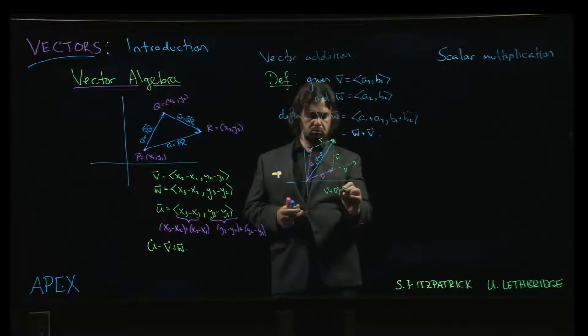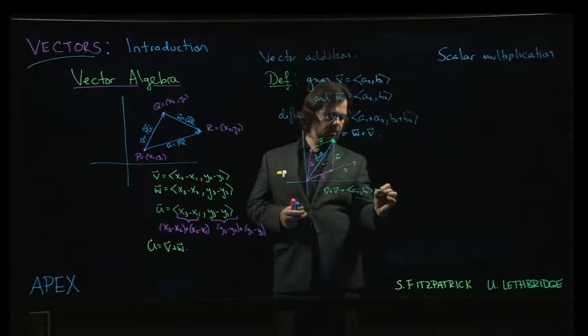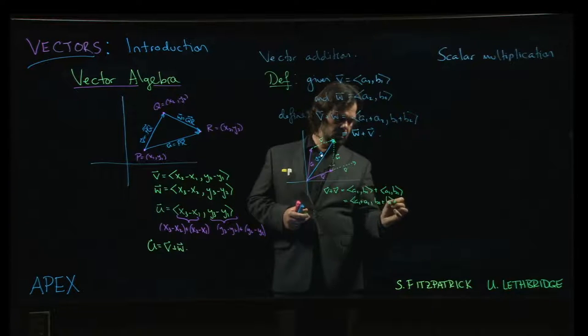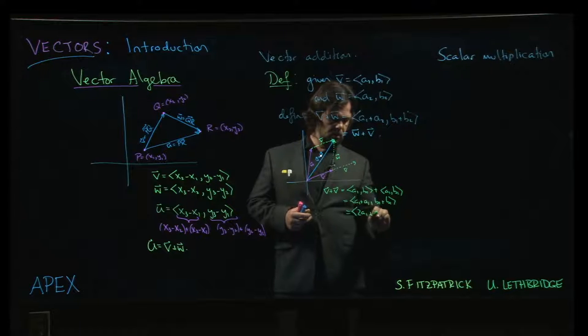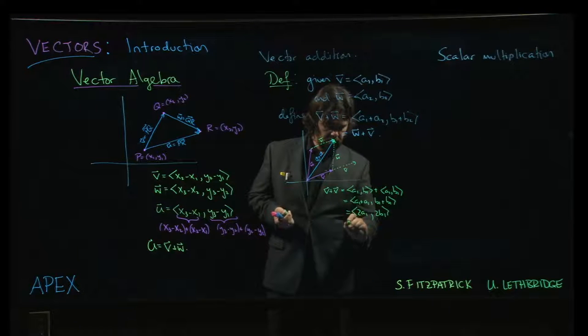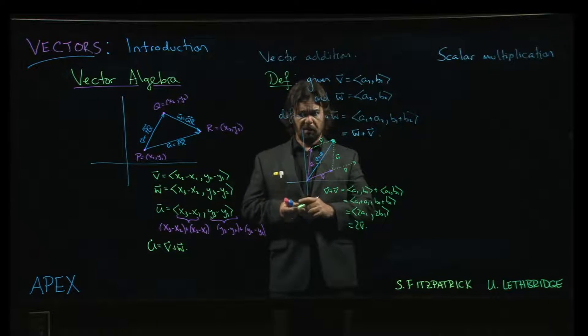v plus v would be (a1, b1) plus (a1, b1), so using this rule it's a1 plus a1, b1 plus b1. That is 2a1 and 2b1. It would be reasonable to refer to this as just 2v, like v plus v equals 2v.